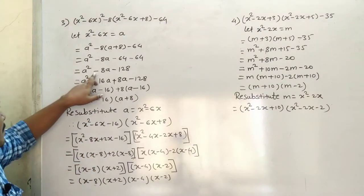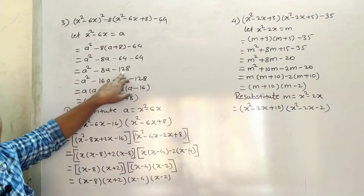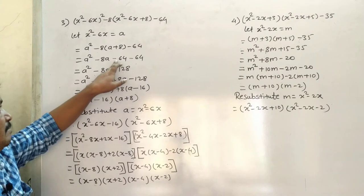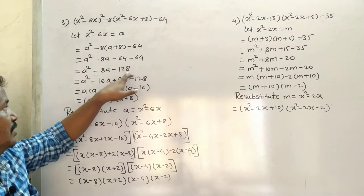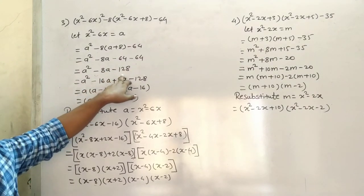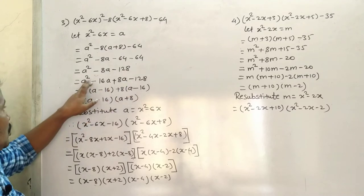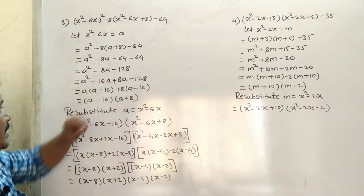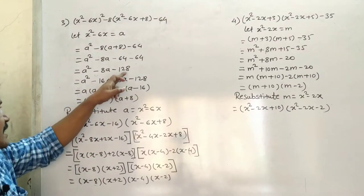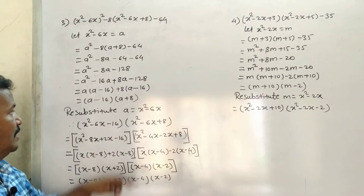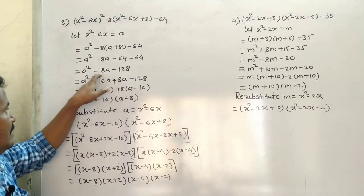So we get a² - 8a - 128. Now for 128, we think: 16 times 8 equals 128, and minus 16 plus 8 gives minus 8a.